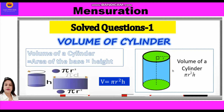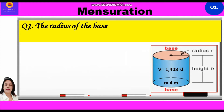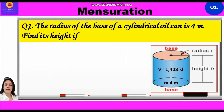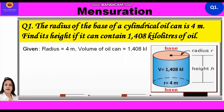Now, let us start with question 1. The radius of the base of a cylindrical oil can is 4 meters. Find its height if it can contain 1408 kilolitres of oil. So, given in this question, radius is equal to 4 meters and volume of oil can is equal to 1408 kilolitres.